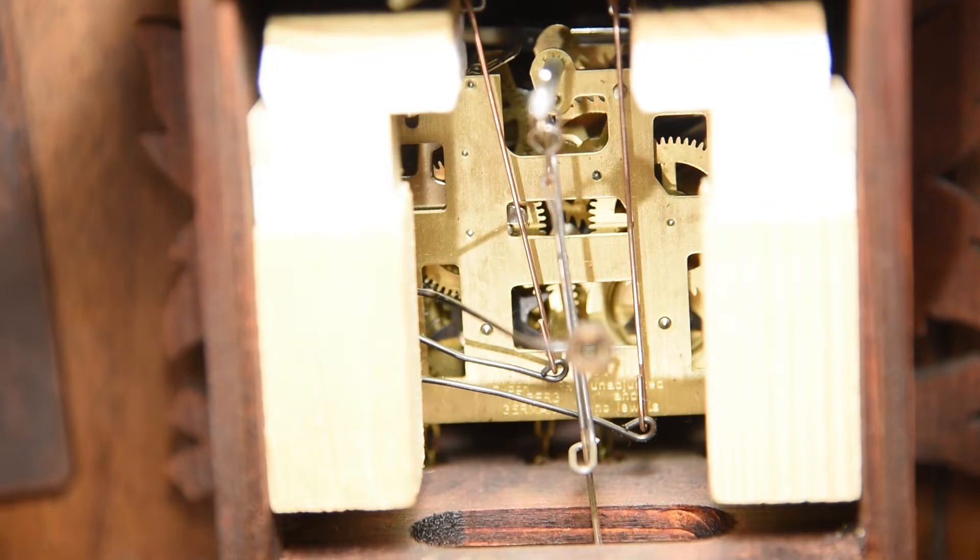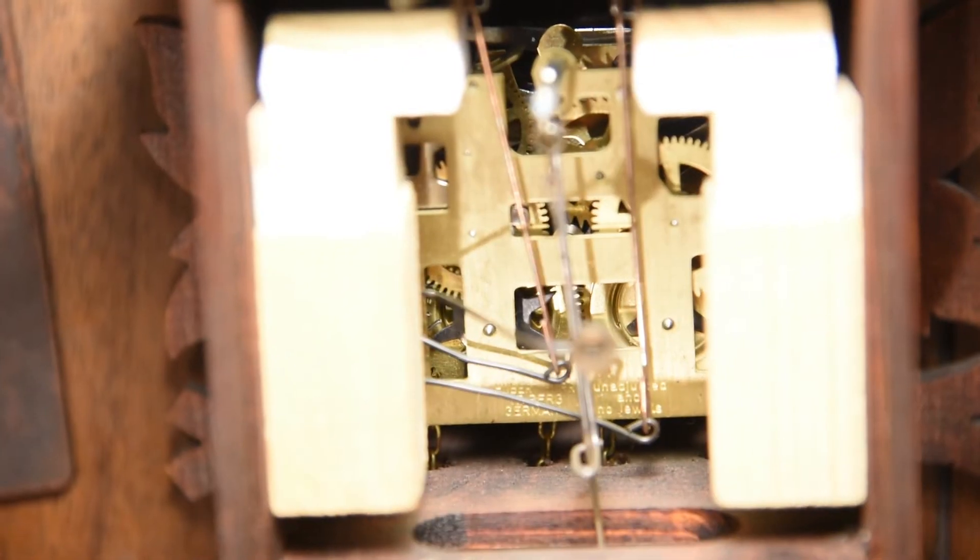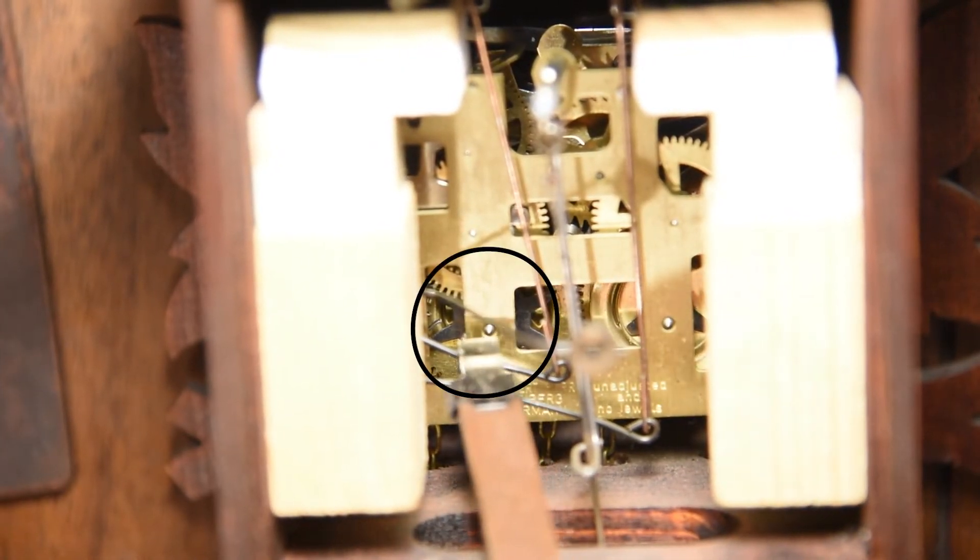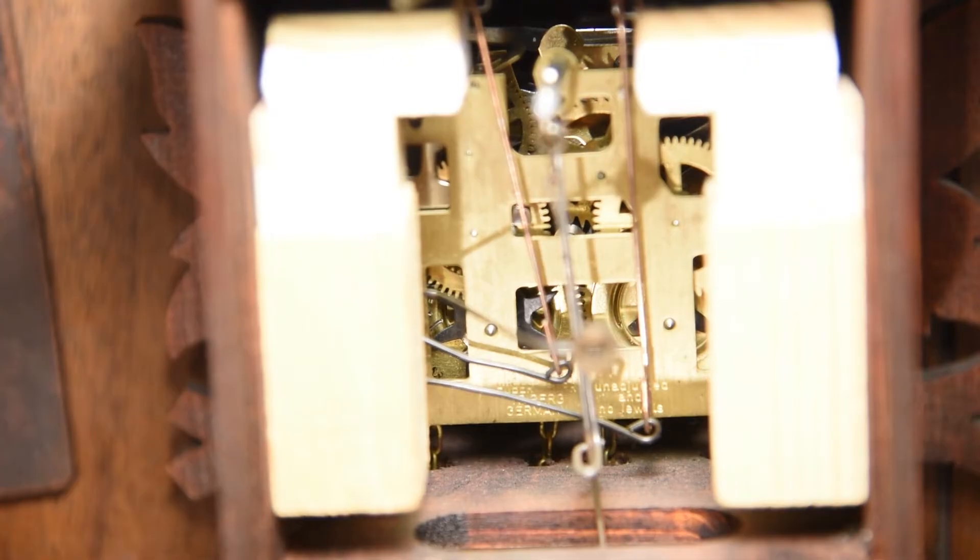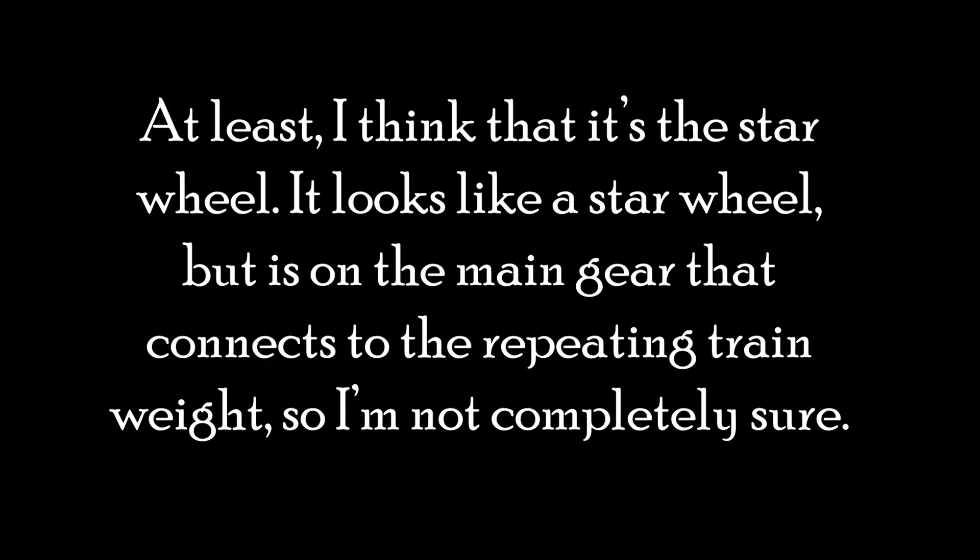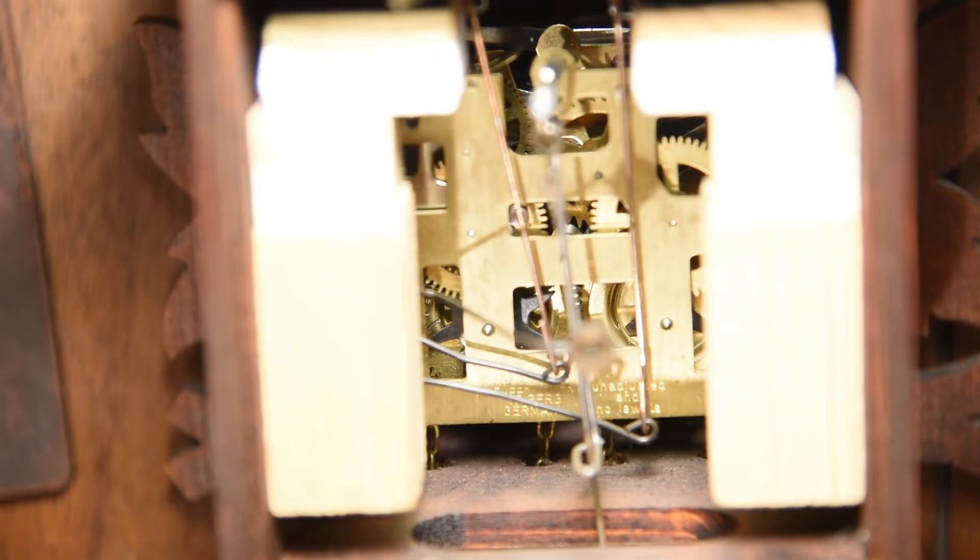But here in the back, we mainly see the striking, the repeating mechanism. This isn't a repeater, it's closer to a sonnery, a chiming clock. You can barely make out the star wheel behind that pinion, and that controls the hour snail.